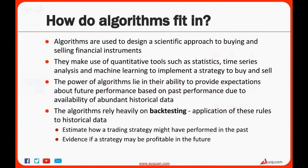So in this entire picture, how do algorithms actually fit in? Till now, we have talked of trading as decisions taken by a person, the trader. However, you can use algorithms to design a scientific approach to take these decisions. Algorithms make use of quantitative tools such as statistics, time series analysis, and machine learning to implement a strategy to buy and sell financial instruments. The power of algorithms lies in the fact that they are quantitative and objective, so you're not relying on a person's discretion. They are also able to provide expectations about future performance of your strategy through a process called backtesting, where you apply the rules of your trading strategy to historical data. Backtesting allows us to estimate how a trading strategy might have performed in the past and provides evidence of how a strategy may perform in the future.